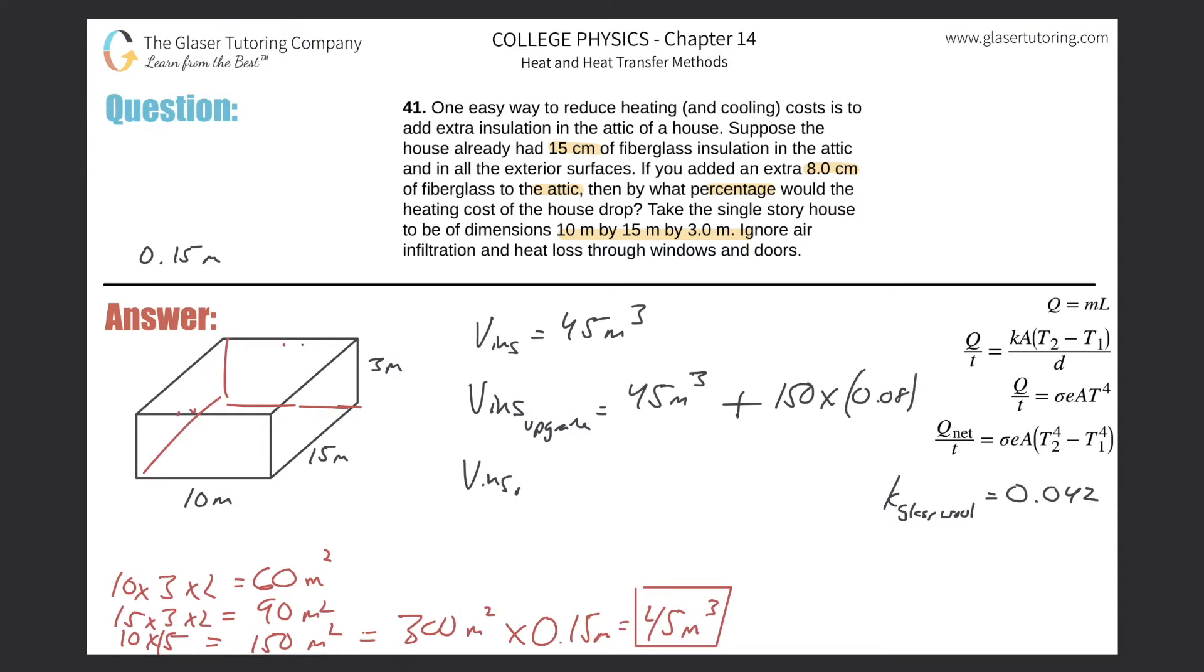So let's do that. This is the volume of insulation in the upgrade. And now we have 45 plus then 150 times 0.08. So this becomes 57, 57 cubic meters.